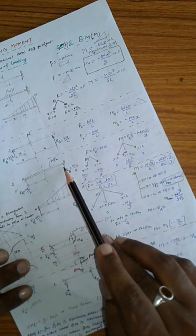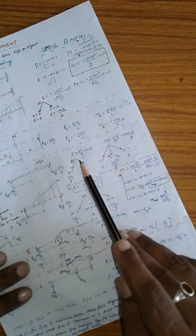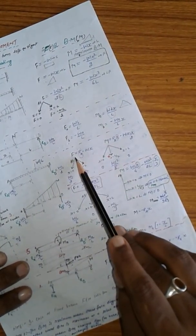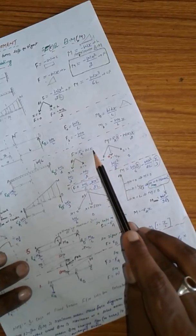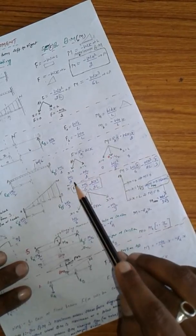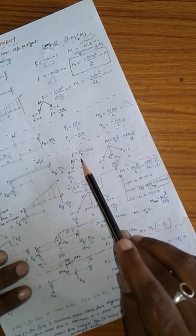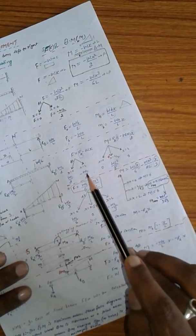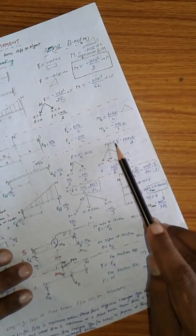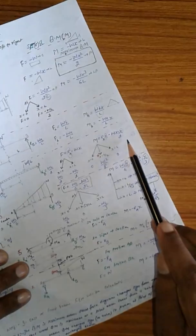In this case, the general equation of shear force is Ra minus wx. At x equal to 0, that is w upon 2 shear force, and x equal to L, minus w upon 2. The general equation of bending moment is Ra into x minus wx into x by 2.